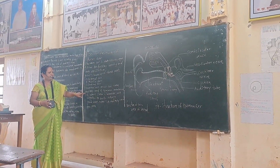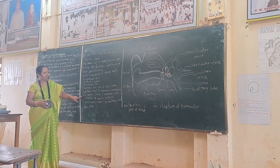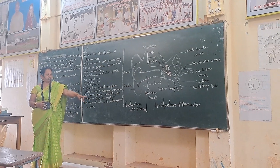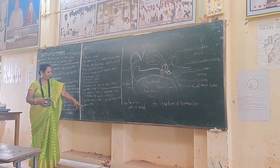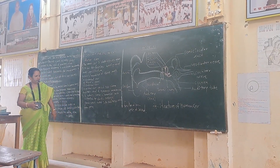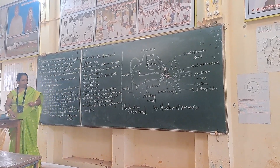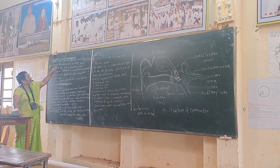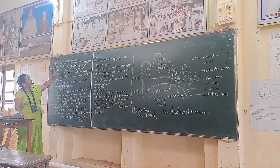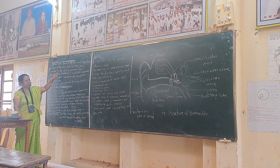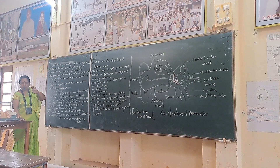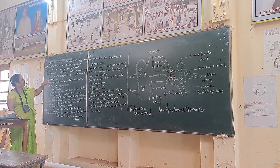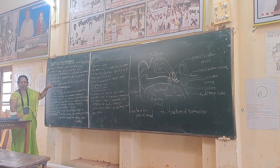The external ear consists of the ear pinna, which is an immovable part supported by elastic cartilage. Sound waves enter from the pinna into the auditory canal, travel through the canal to touch the ear drum. There are also wax-secreting glands present in the skin of the auditory canal. The tympanic membrane is a delicate membrane structure which transfers the sound waves into the middle ear.